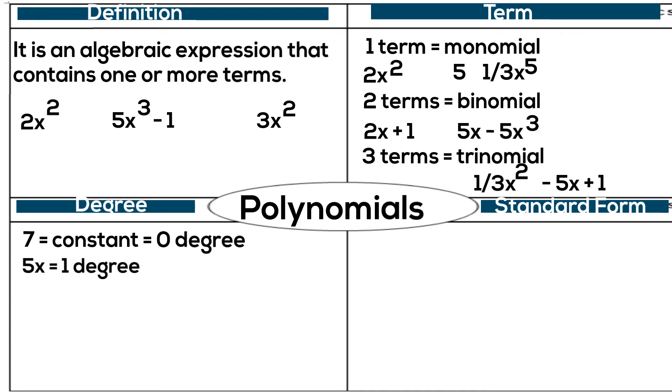Another example is 5x. We don't write a one, but we know that it is to the first degree because of the exponent on the variable. This one is a linear term. 7x squared has a degree of two because the variable is to the second degree, and it is also called a quadratic.